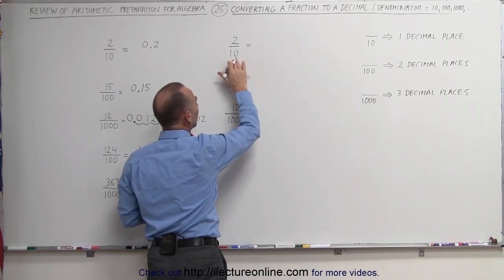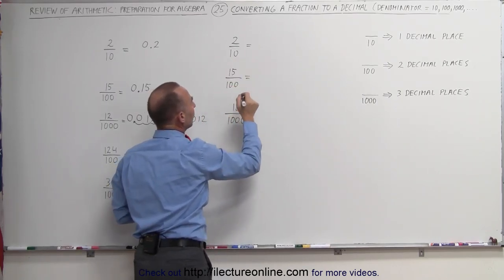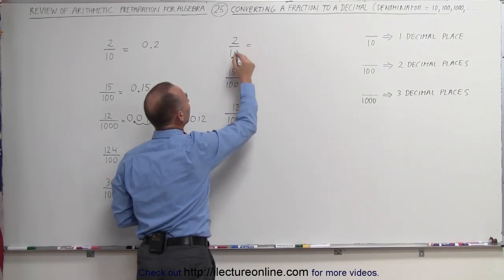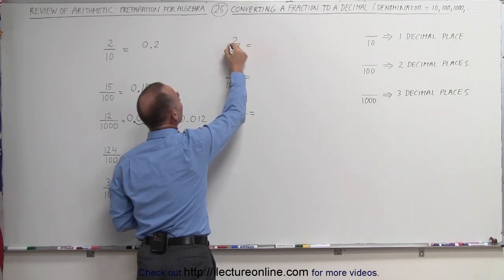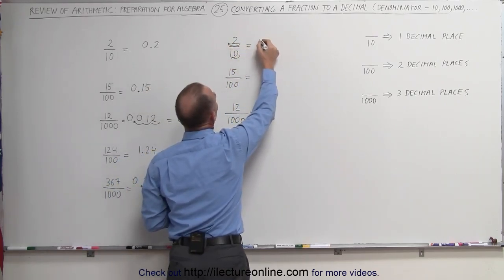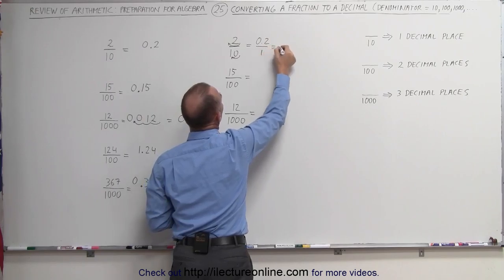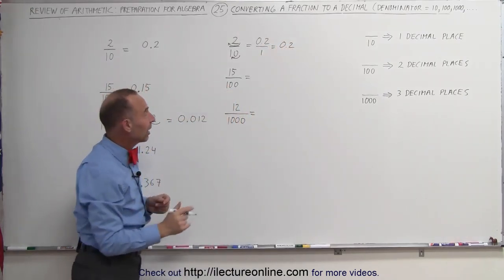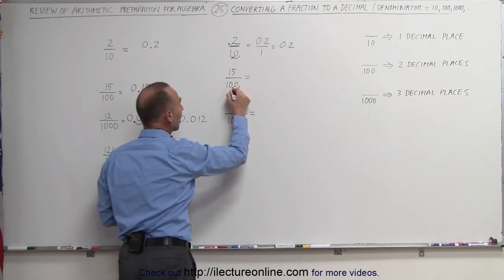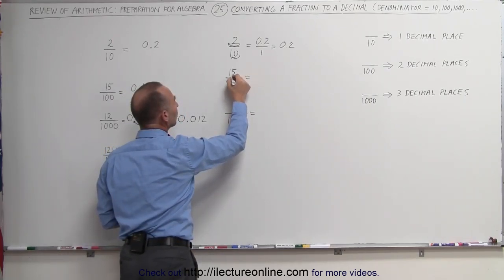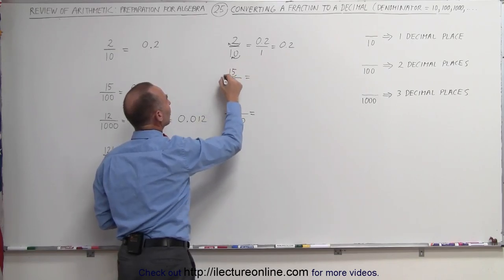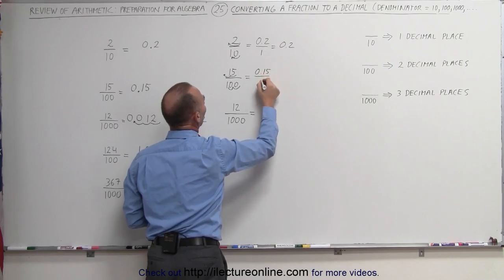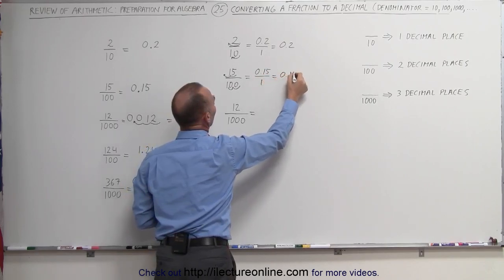Let's start again with 2 divided by 10, 15 divided by 100, or 12 divided by 1000. The idea is to take the denominator and turn it into a 1. To do that, you move the decimal point one spot to the left in 10, then do the same with the numerator — moving one spot gives 0.2 divided by 1, which is 0.2. For 15 divided by 100, move the decimal two spots, turning it into 0.15 over 1, which is simply 0.15.